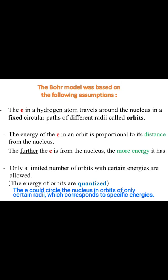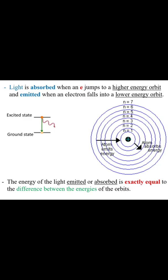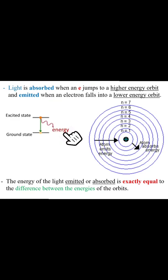According to this model, the electron could circle the nucleus in orbits of only certain radii, which correspond to specific energies. Radiation is absorbed or emitted when an electron moves from one orbit to another. Light is absorbed when an electron jumps to a higher energy orbit, and emitted when an electron falls to a lower energy orbit. The energy of the light emitted or absorbed is exactly equal to the difference between the energies of the orbits.